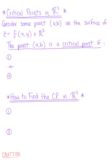Now that we have explored the three different types of extrema, we ask ourselves: how do we find these extrema, or how do we find these critical points in three dimensions? We want to consider some ordered pair (a, b) on the surface of our function f(x, y) in R3.